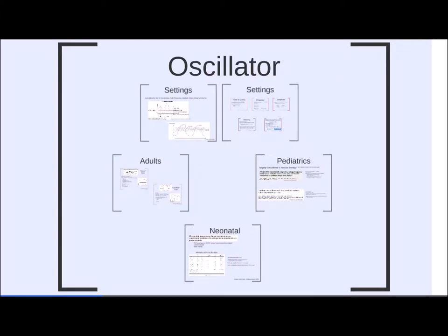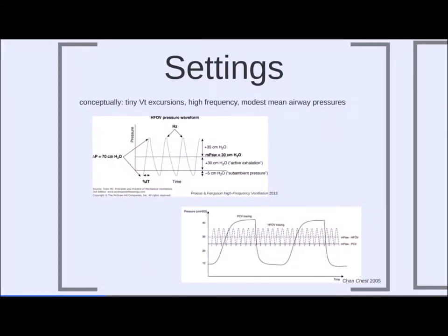Moving on to the oscillator, which has more clout in the pediatric population than in adults. The conceptual idea is to use tiny tidal volumes — essentially shaking the alveoli — so they don't experience the injurious opening and closing we saw in subpleural microscopy. These small tidal volumes must be delivered at high frequency to maintain adequate ventilation. Modest mean airway pressures minimize barotrauma. The frequency is set in hertz, and the inspiratory time is set as a percentage of the cycle rather than a traditional I:E ratio.